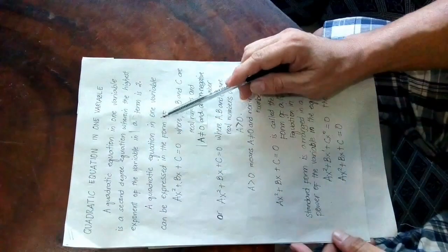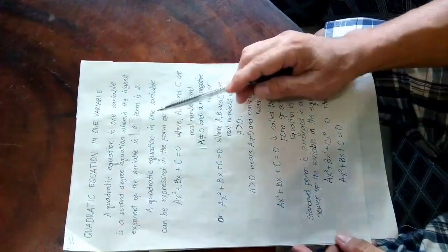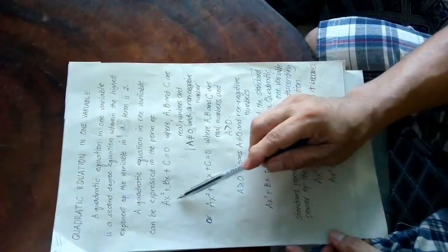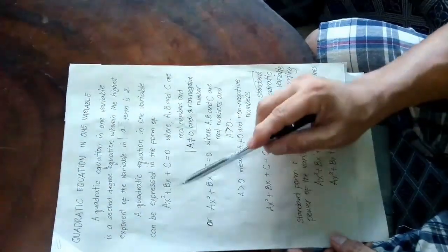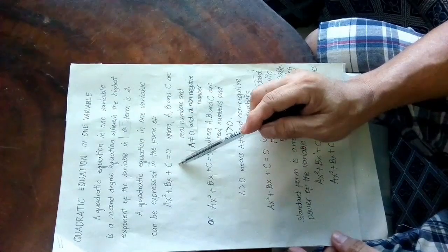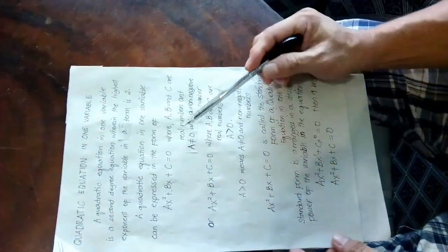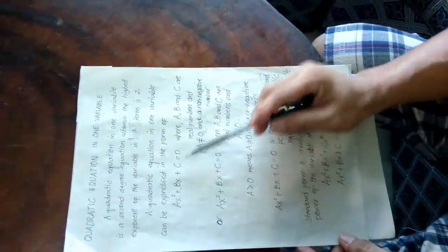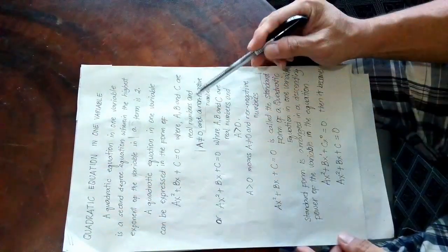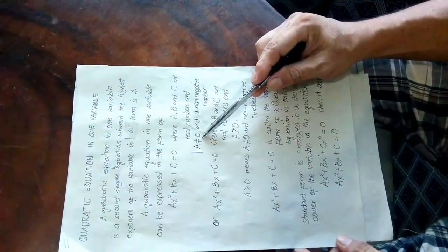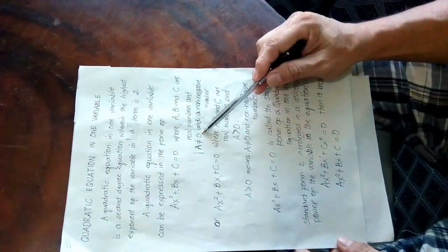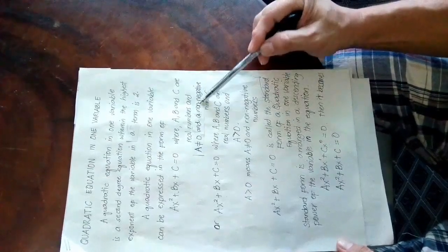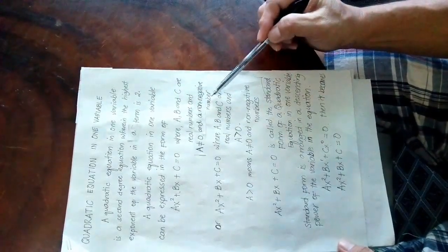A quadratic equation in one variable can be expressed in the form of Ax squared plus Bx plus C equals 0, where A, B, and C are real numbers, and A is not equal to 0, and it is a non-negative number.